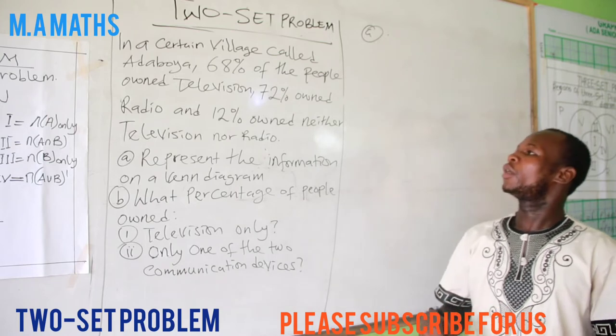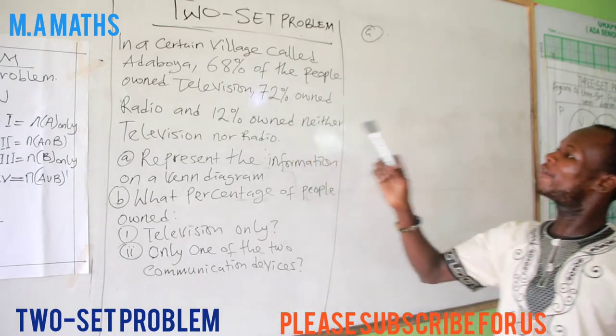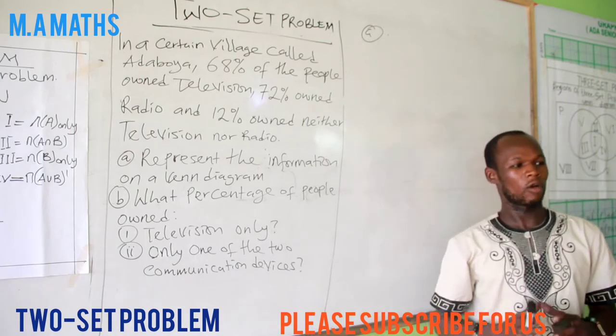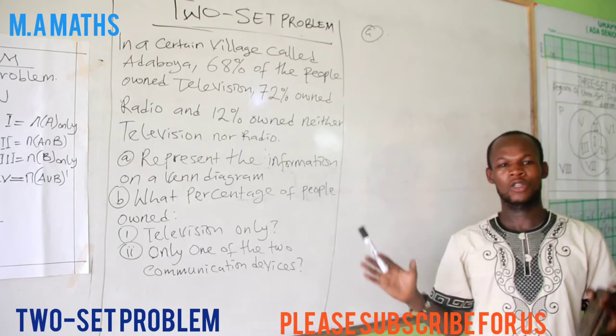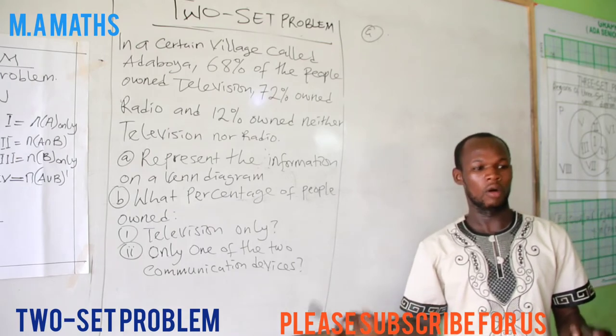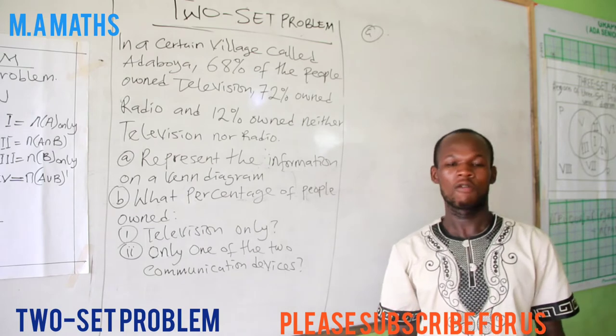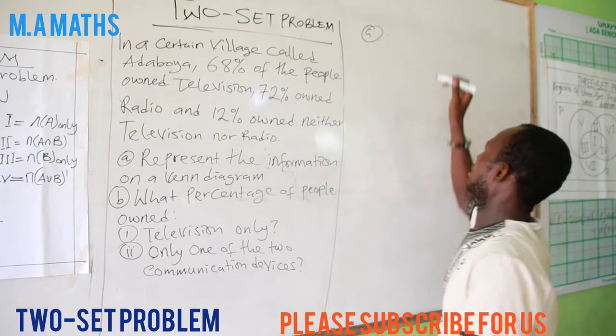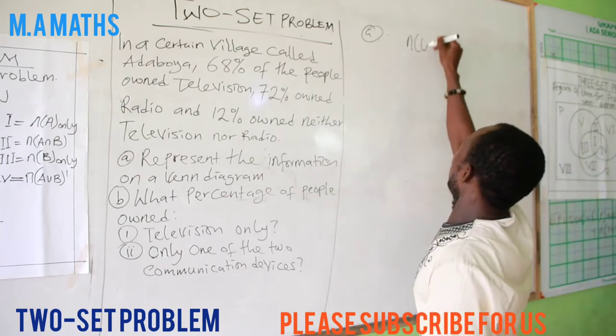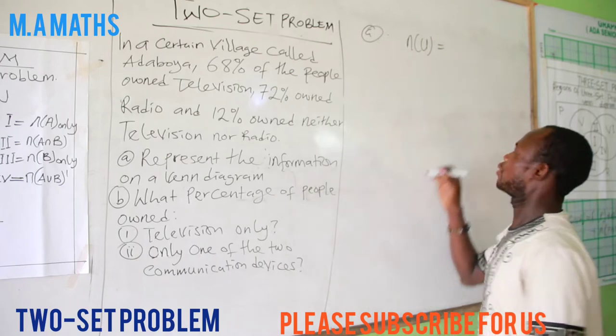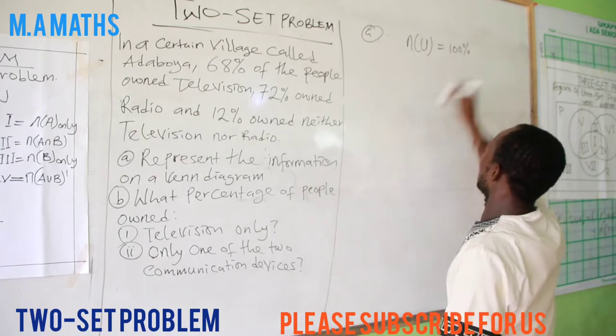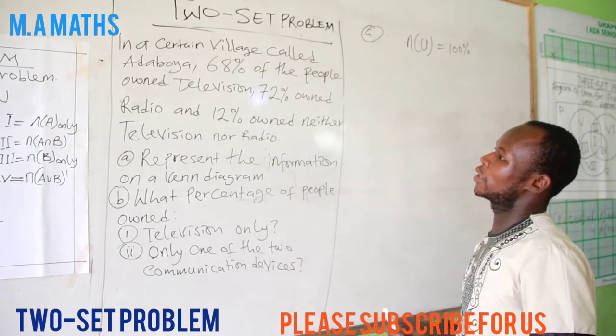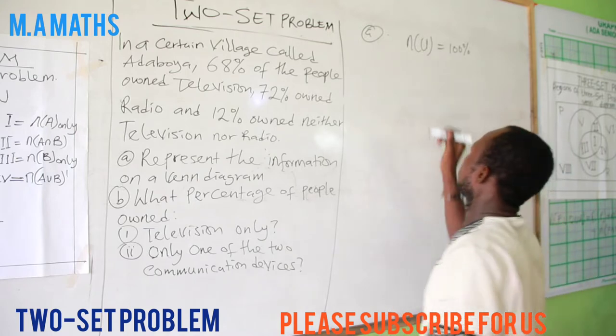In that case, we have they are giving to us in percentage. But we know that in mathematics education, when we are talking about percentage, we are dealing with 100 percent. For that matter, the total for the percentage is 100 percent. So n(U) will represent the universal set, which will be 100 percent.